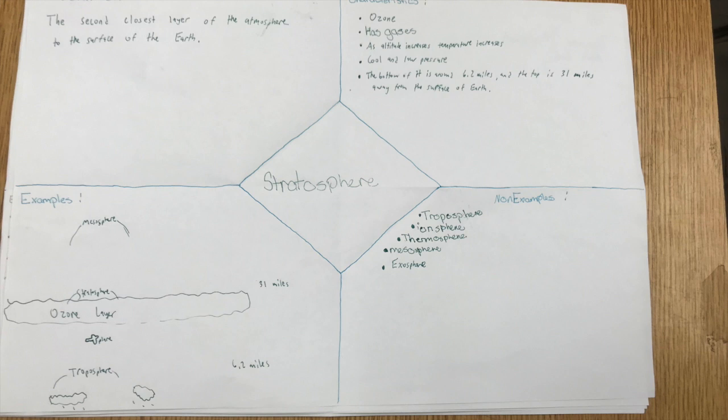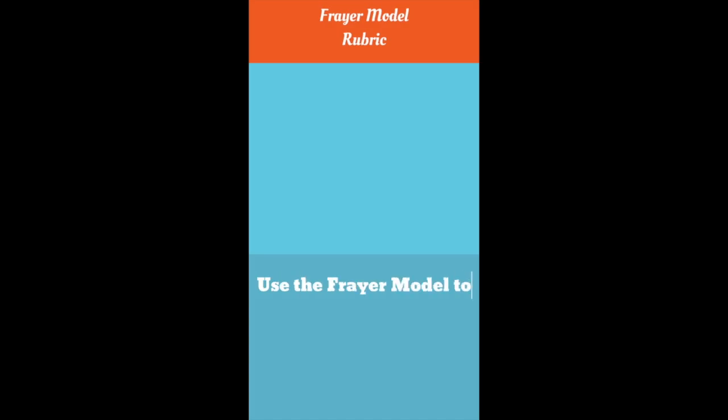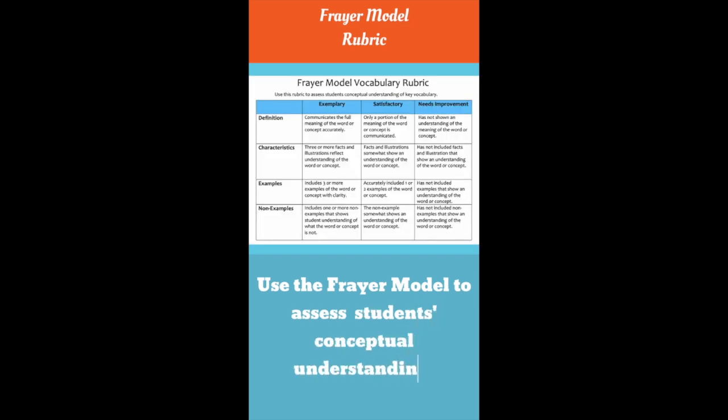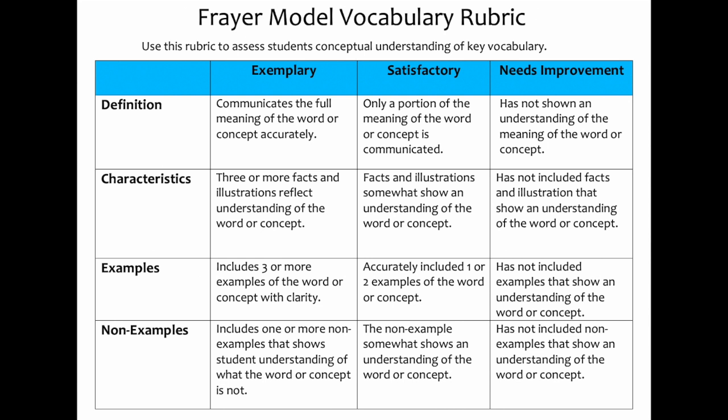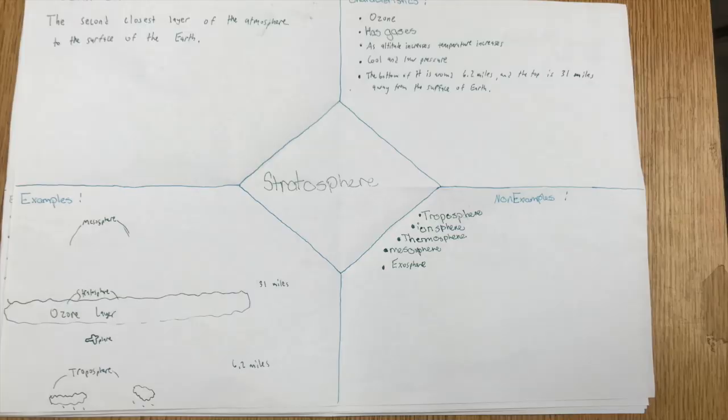Let's take a look at an example of a student's Frayer model for the word stratosphere. As we're looking at this example, we'll use the Frayer model vocabulary rubric to assess the student's conceptual understanding of the word stratosphere. You'll see that the student has placed the word stratosphere in the center of the Frayer model.